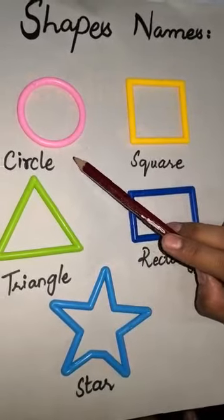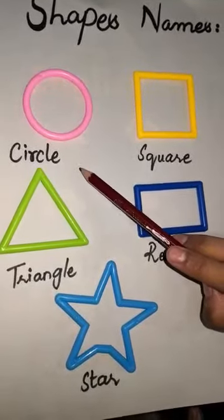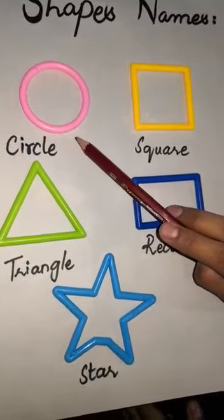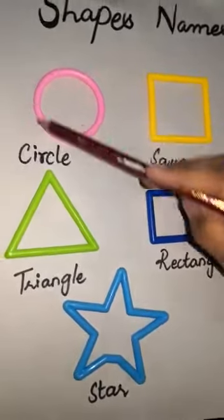This is a circle. C I R C L E. Circle. It has no sides.